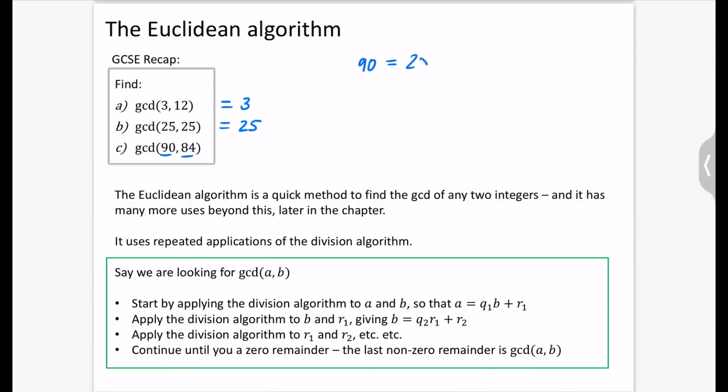So it's 2 times 3 squared times 5. And then 84 is 2 squared times 3 times 7. So the only thing that they've both got in common is a single 2 and a single 3. So it is just 2 times 3 because they both have a 2, they both have a 3, everything else they don't have in common.